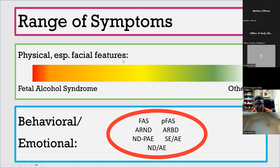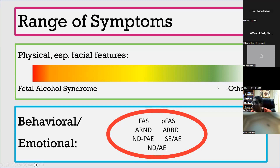You can have a variety of symptoms. Most people associate facial features with FASD, and that should not be your number one symptom. Fetal alcohol syndrome, which is one of the specific diagnoses, does have some facial features associated with it, whereas the others do not, and are therefore considered invisible disabilities.